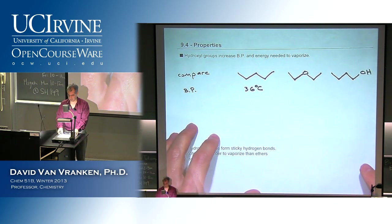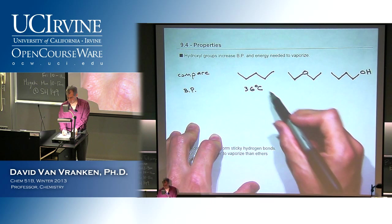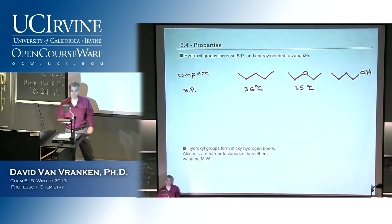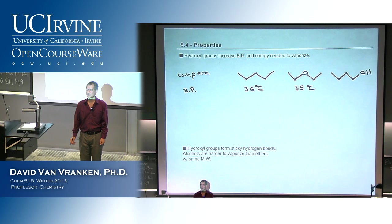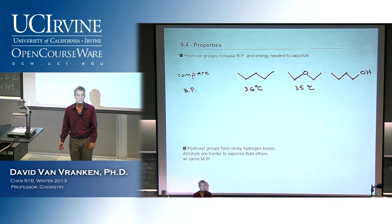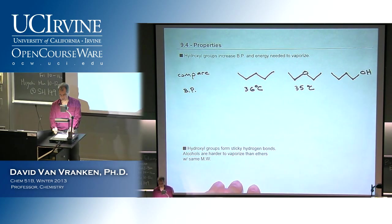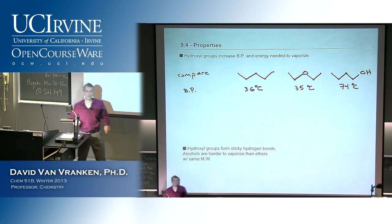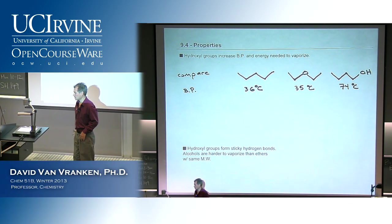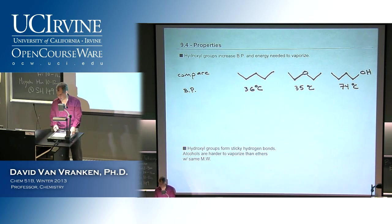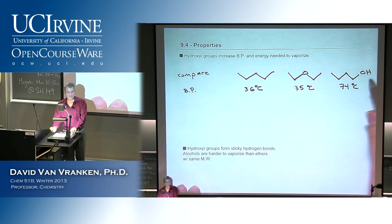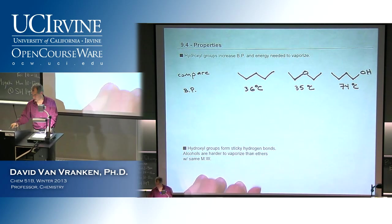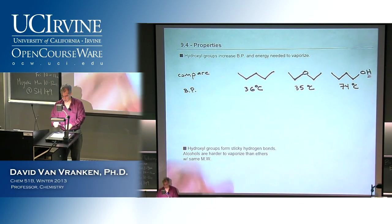Diethyl ether is also very volatile. We'll see reactions in Chapter 20 where you have to use an ether as the solvent. Simply by moving that oxygen over to the end, we double the boiling point. Alcohols are vastly more polar than either ethers or alkanes. It's that H at the end attached to the oxygen that makes the huge difference — this accounts for the higher boiling point of the alcohol.